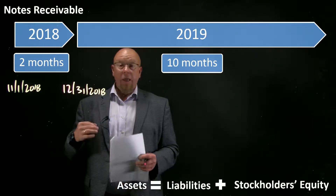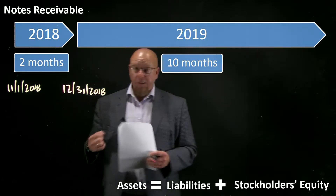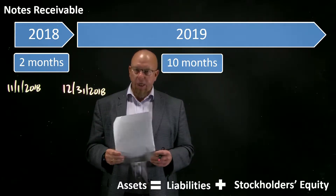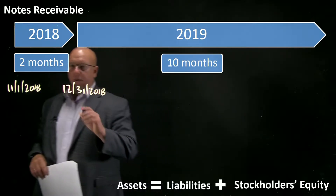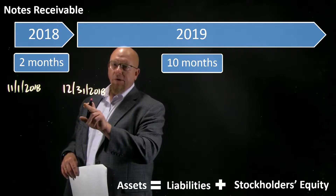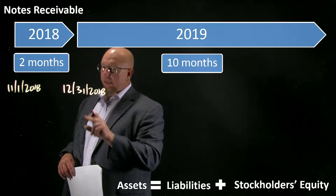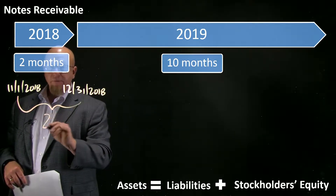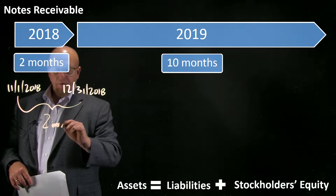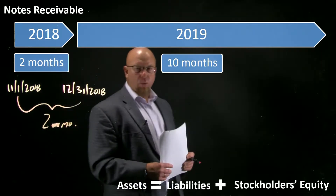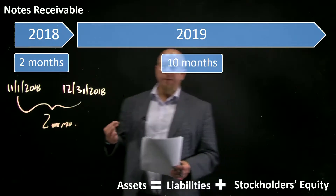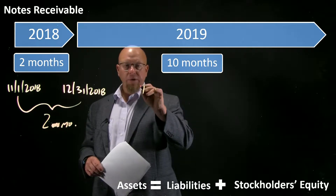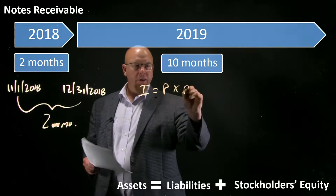The net effect at this point is zero — nothing affects liabilities and stockholders' equity. Here's where the complication comes into play: accrual accounting tries to measure what occurred during a particular time period. At the end of 2018, when the ball drops on New Year's Eve, the borrower has rented our money for two full months, and we need to capture the economic effects of that.